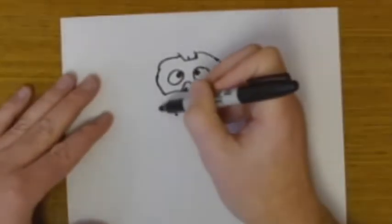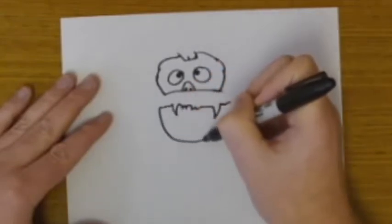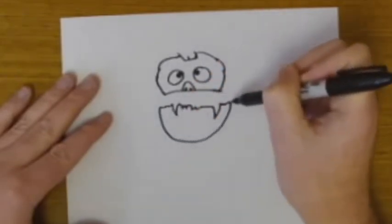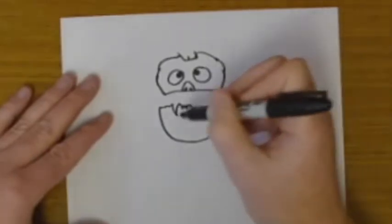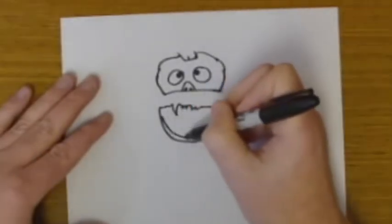Pretty easy. Just some fangs on the outside, and then a big curved line on the bottom. And we're going to add the bottom lip in here.